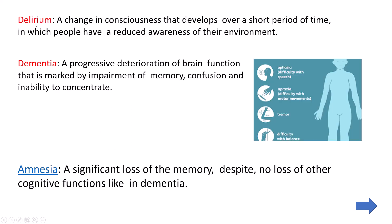In alteration in thinking, delirium, dementia, and amnesia are covered. Delirium is similar to dementia but is an acute condition that develops over a short period of time, while dementia is a chronic condition. In dementia, consciousness is not affected, but in delirium, consciousness is affected — there is a change in consciousness. Both conditions involve memory, learning, and thinking problems, but that difference in consciousness is important.